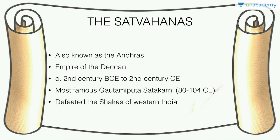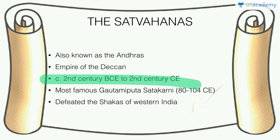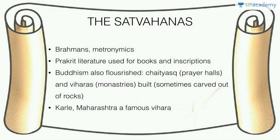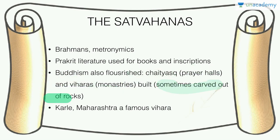The Satavahanas, also known as the Andhras, were an empire of the Deccan called Lords of Dakshinapatha — rulers of the path leading south. They ruled from the 2nd century BCE to the 2nd century CE. Their most famous ruler was Gautamiputra Satakarni. They defeated the Shakas of western India. They were Brahmans who followed a matronymic naming system, though still patrilineal and patriarchal. Under them, Prakrit literature and Buddhism flourished. Chaityas (prayer halls) and viharas (monasteries) were built, some carved straight out of rock. Karle in Maharashtra is one famous vihara built under the Satavahanas.